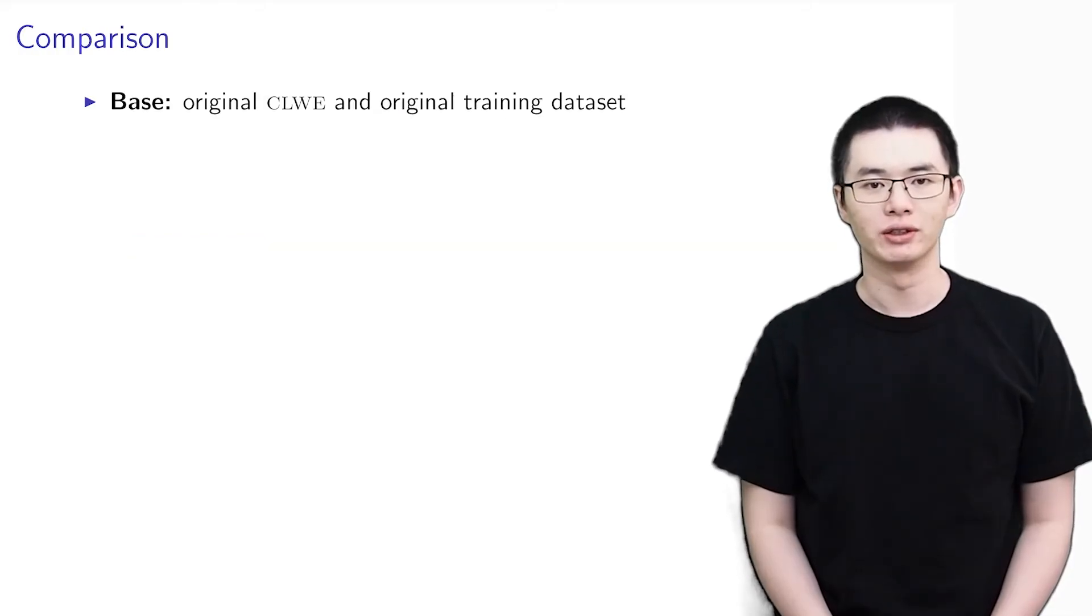To improve a model, we could also ask users to label additional documents instead of using CLIME. Therefore, we focus on comparing CLIME with active learning.